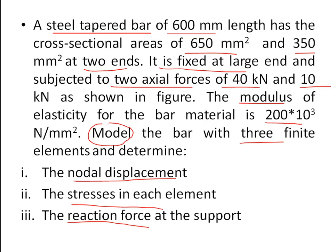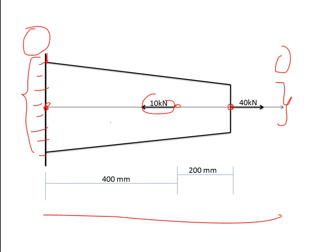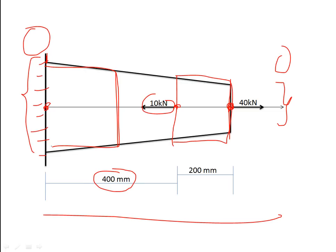We start by modeling the bar with three finite elements. Wherever there is a point load, we need to place a specific node at that point. One point load is at the free end, and another is 200 mm away, so we break the element there. The remaining 400 mm length is divided into two equal parts, giving three elements each of length 200 mm.